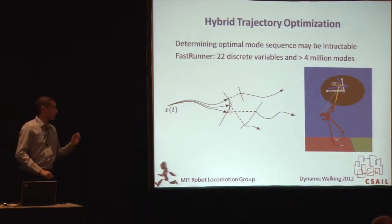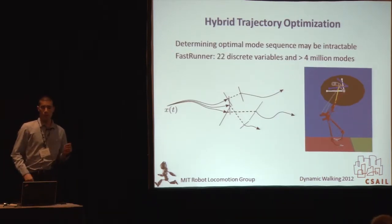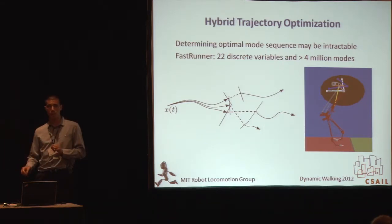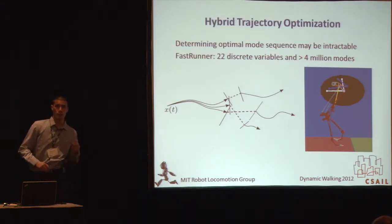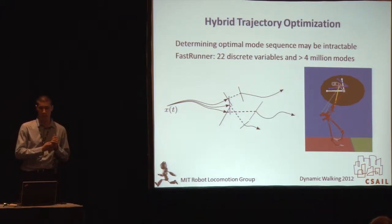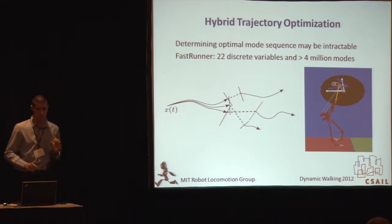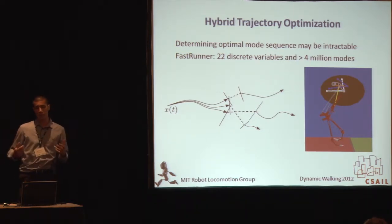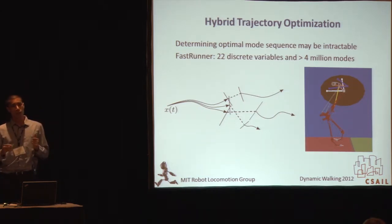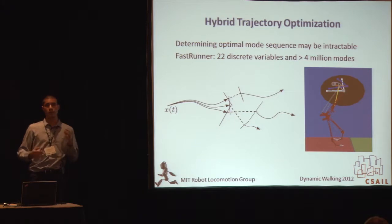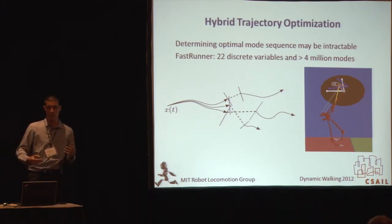But what happens when we get to something more like a fast runner? Here we're looking at 22 discrete variables in a planar model — contact points on the feet as well as joint limits, which are very similar especially when impacting joint limits around contact with the ground. Instead of a nice clean mode sequence, we might have a very muddled one. It's no longer obvious what a good sequence is going to be. We want to reason through contact instead of treating it as a black box tunnel from one mode to another.